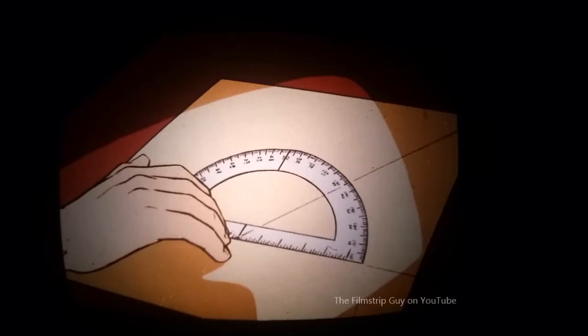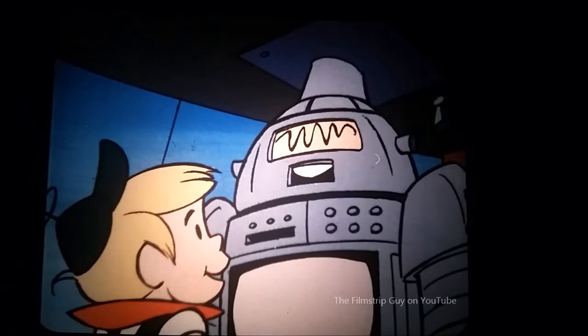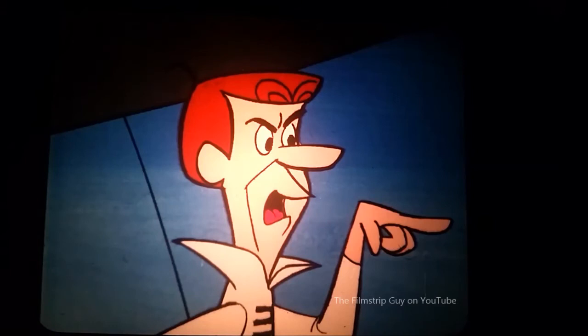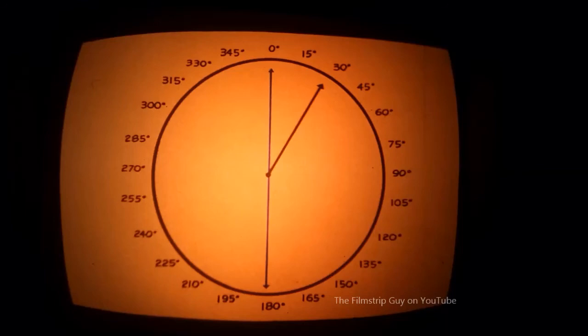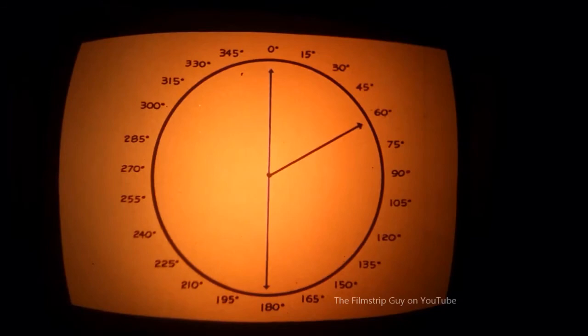Place the straight edge on one ray with the center arrow at the vertex. Read the degrees that the other ray passes through. This is the size of the angle. That's pretty easy. Yes, even your father could use it. Watch it, you transistorized troublemaker. Let us move on with our investigation of angles. I shall fix two rays so they form a straight angle — that is an angle of 180 degrees.